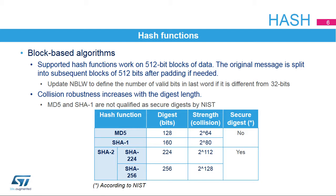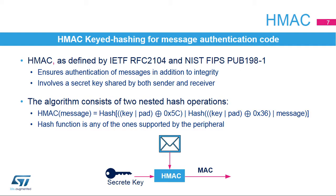MD5 and SHA-1 are not qualified as secure digests according to NIST. The hash-based message authentication code, or HMAC, is used to authenticate messages and verify their integrity. The HMAC function consists of two nested hash functions with a secret key that is shared by the sender and the receiver.